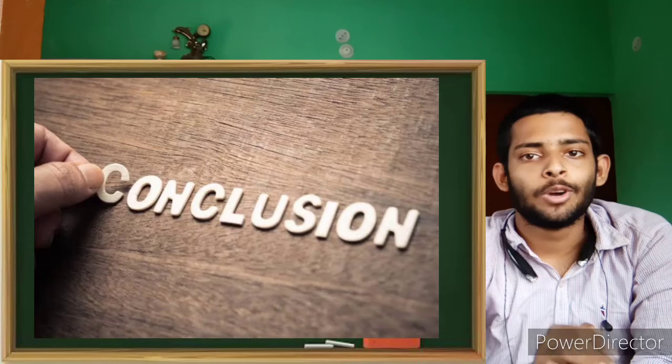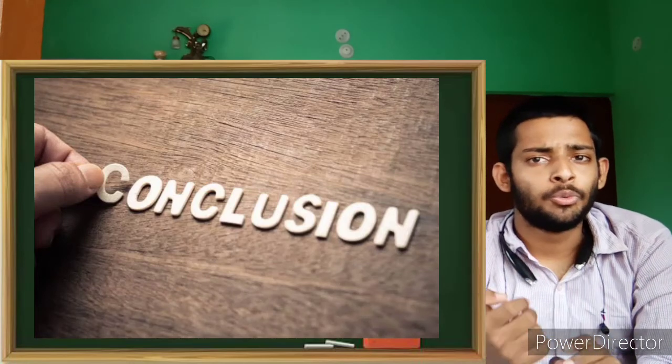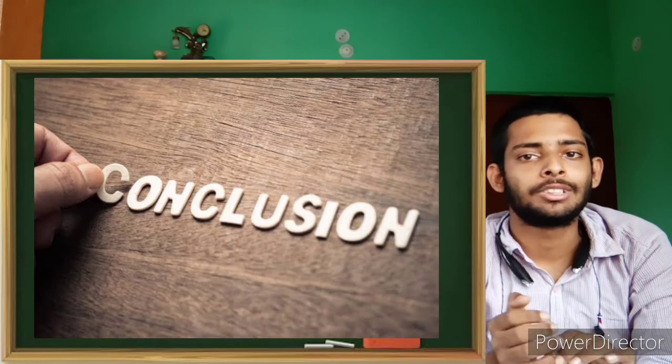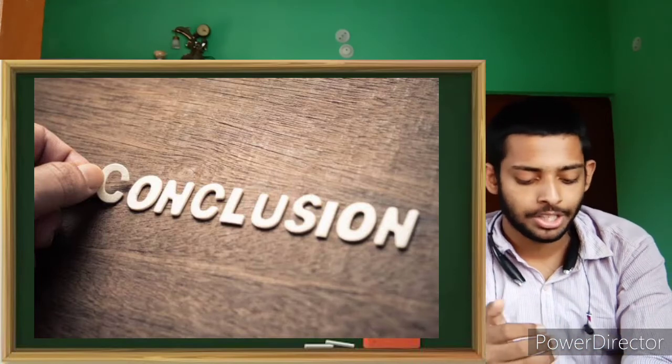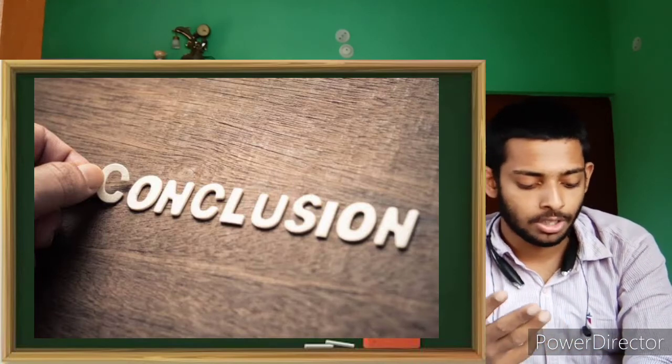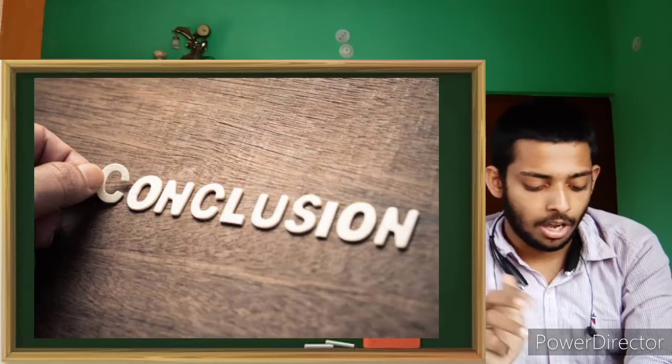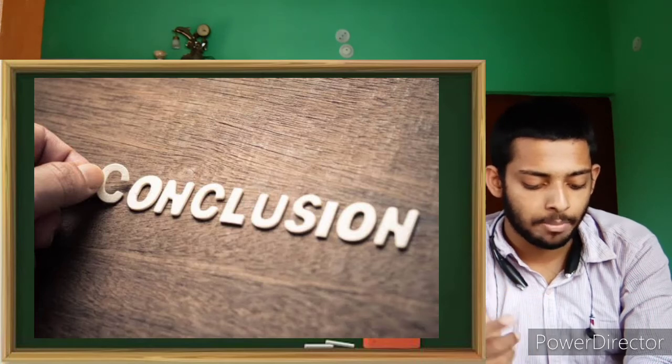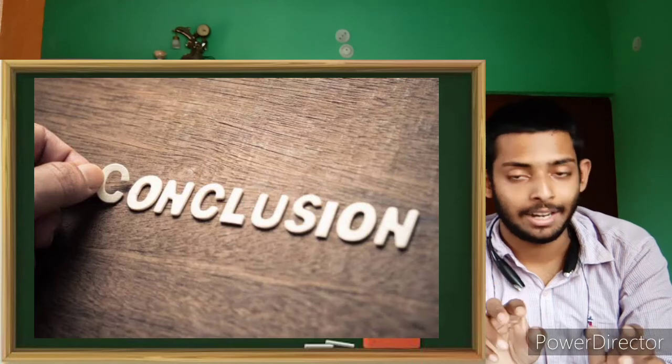And so at last, let me conclude the total video. So we have discussed here about the actual statement about the theory, Prevost's theory of heat exchange, which was all body radiates thermal energy at all temperatures. The amount of thermal radiation radiated per unit time depends on the nature of the emitting surface and its area and temperature.